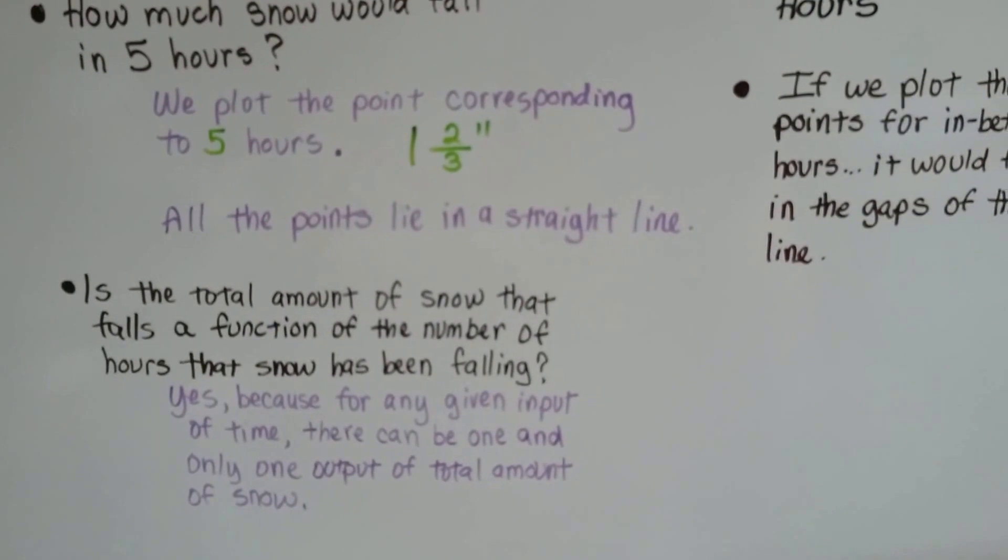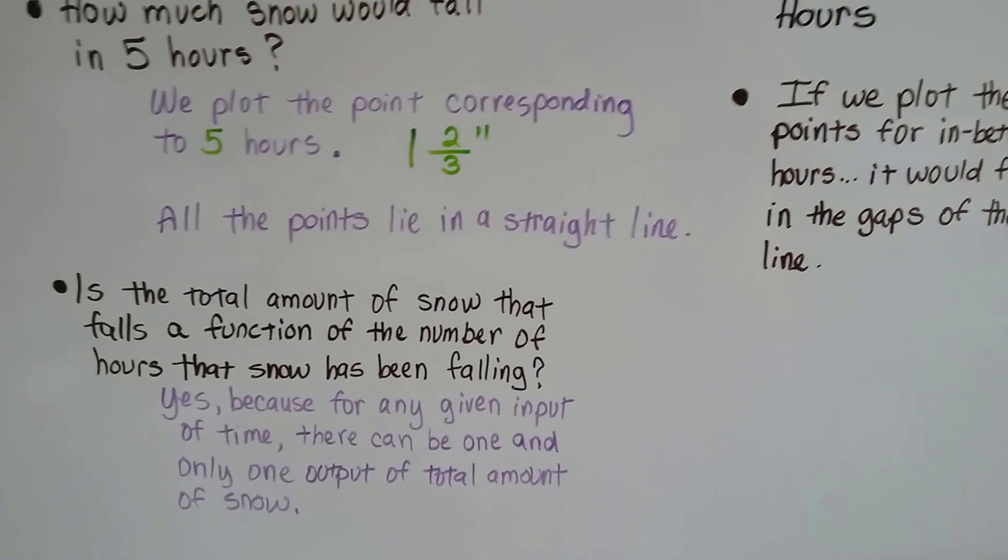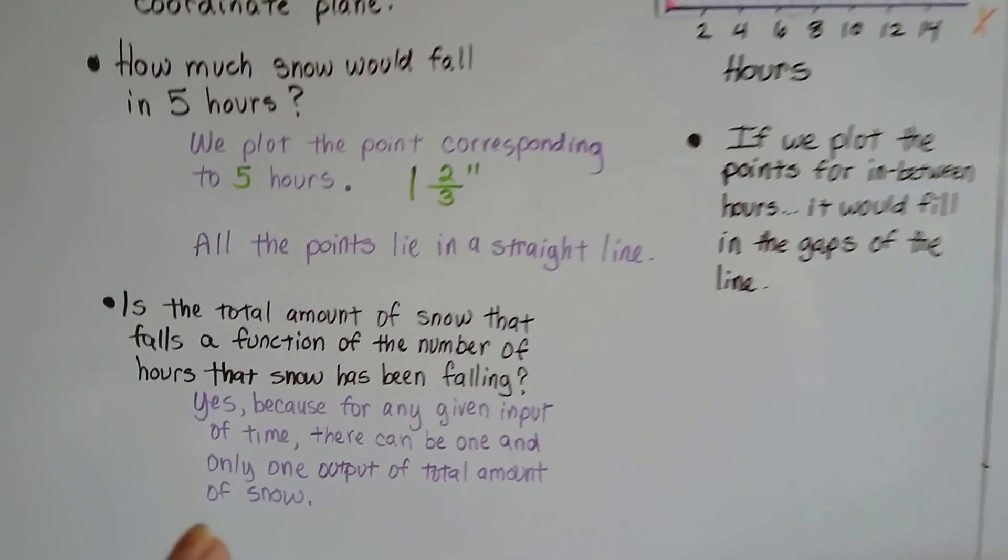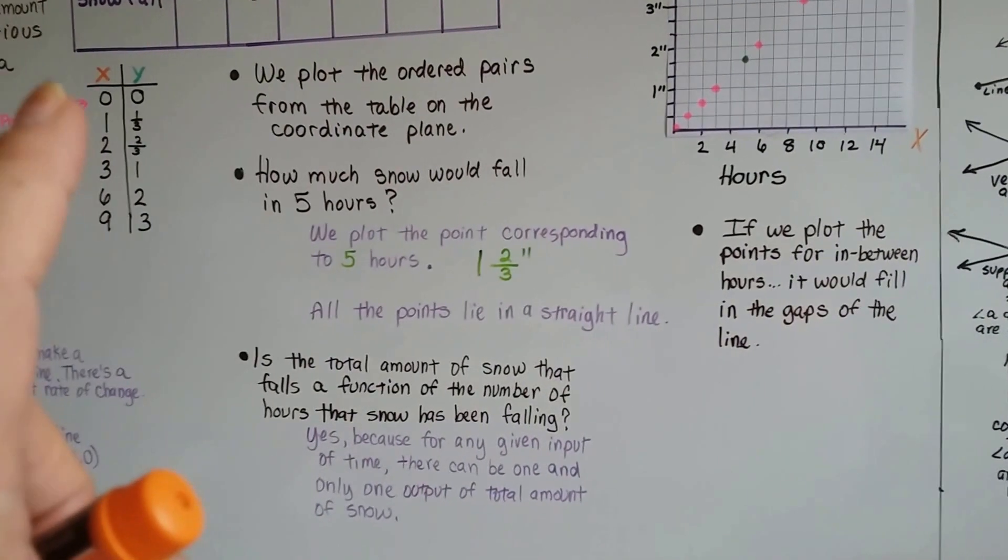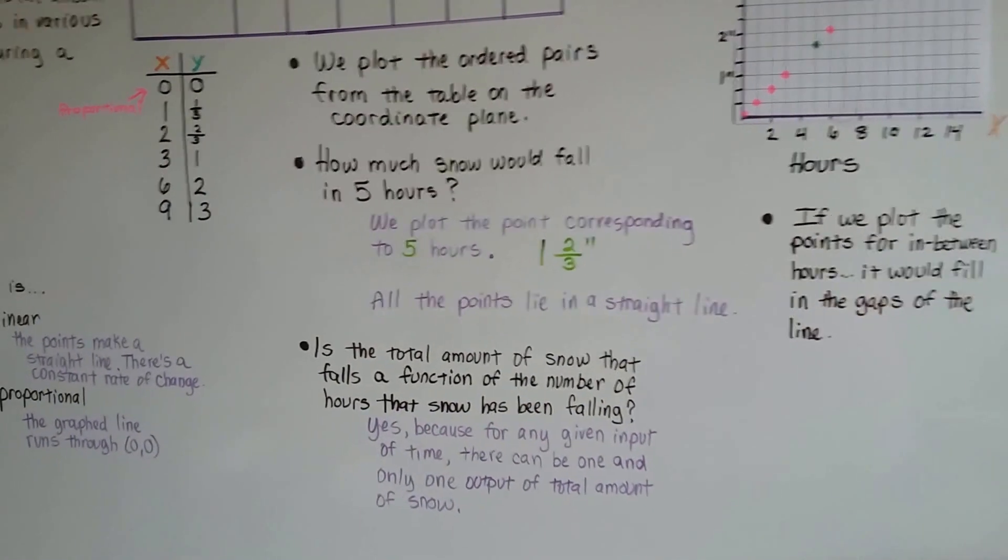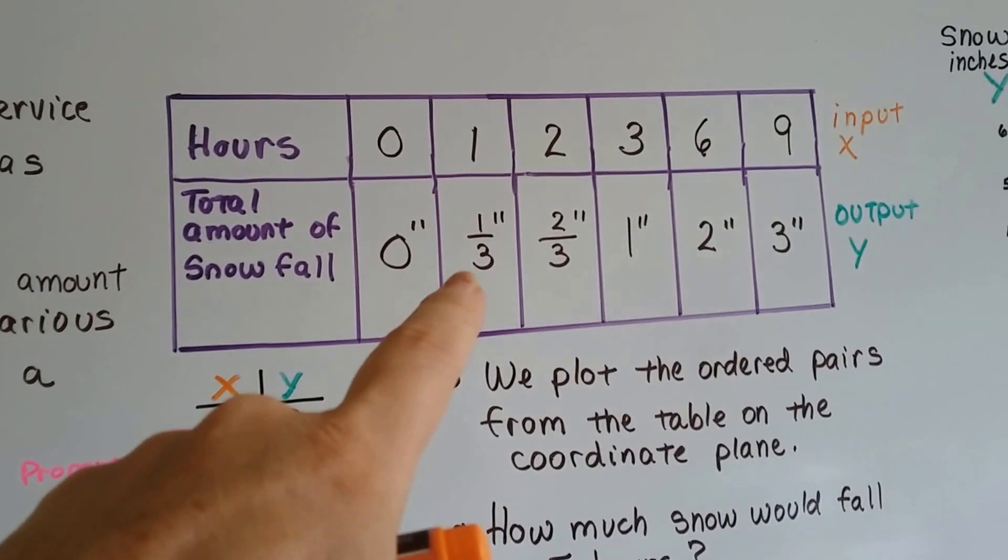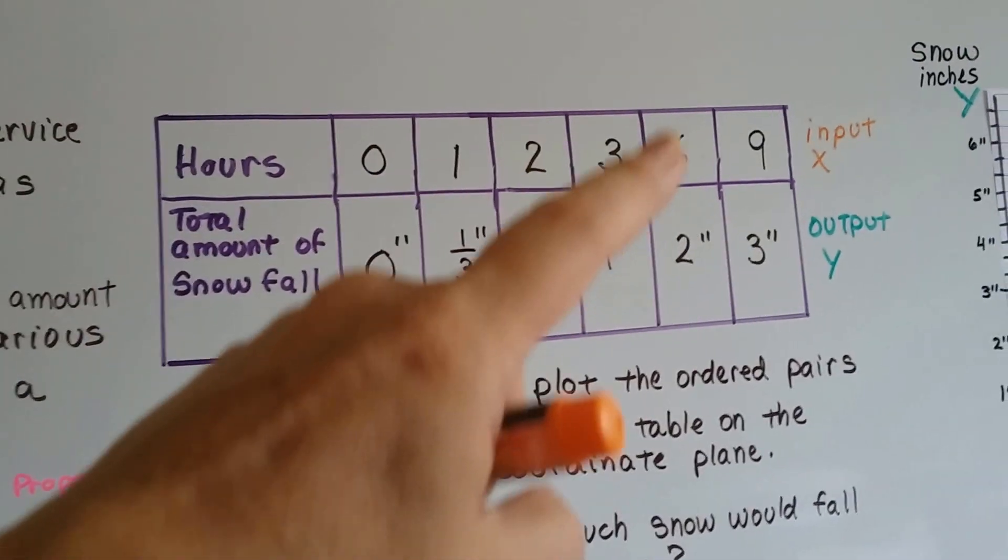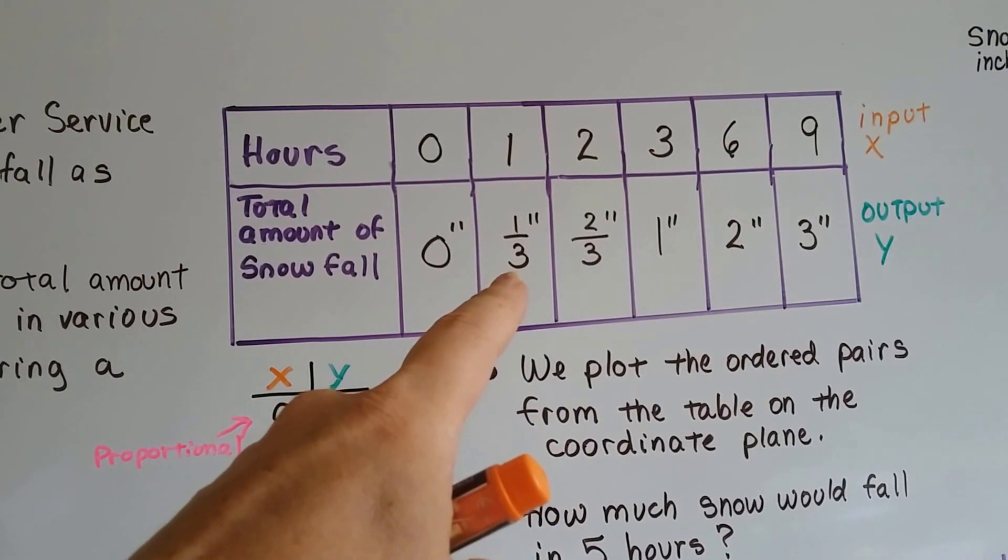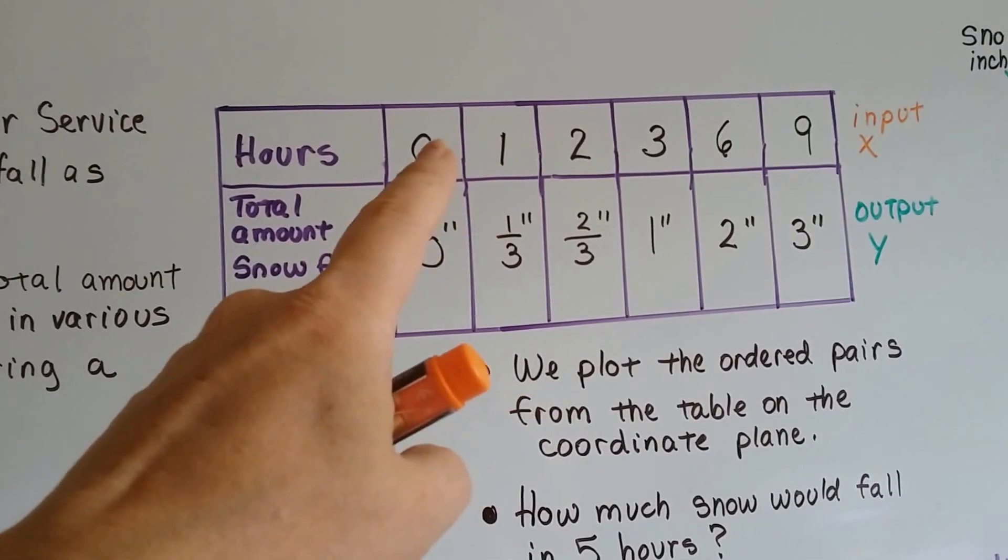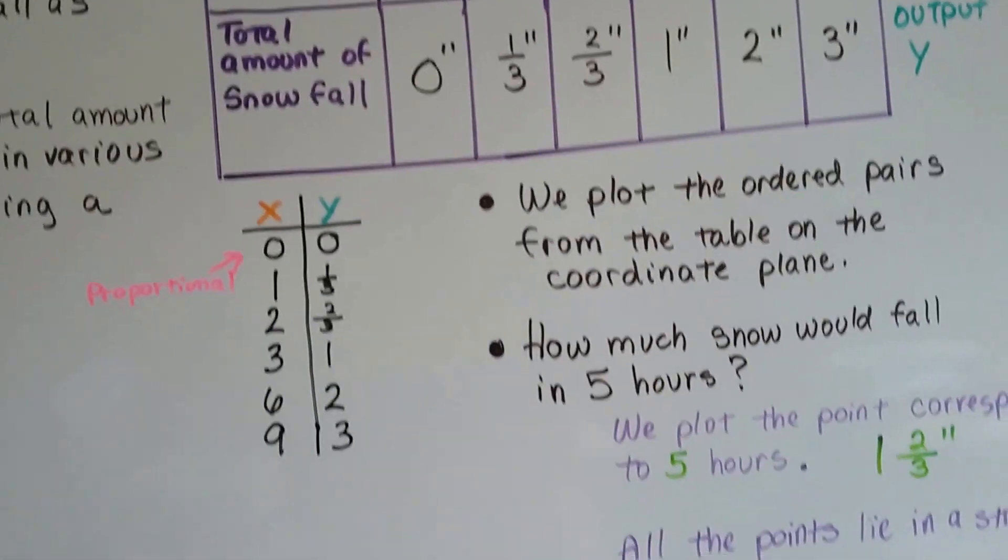Is the total amount of snow that falls a function of the number of hours that snow has been falling? Yes. Because for any given input of time, there can only be one and only one output of total amount of snow. So in 1 hour, there can only be 1 output. For each input, there's 1 output. Each input has its own output.